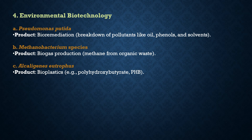In environmental biotechnology, Pseudomonas putida is used in bioremediation to break down pollutants like oil, phenols, and solvents. The advantage is it can metabolize a wide range of organic compounds, making it useful for cleaning up environmental contaminants. The disadvantage is it is limited to certain environmental conditions — oxygen availability is essential since it is aerobic — and it requires long-term monitoring and maintenance as bioremediation takes considerable time.